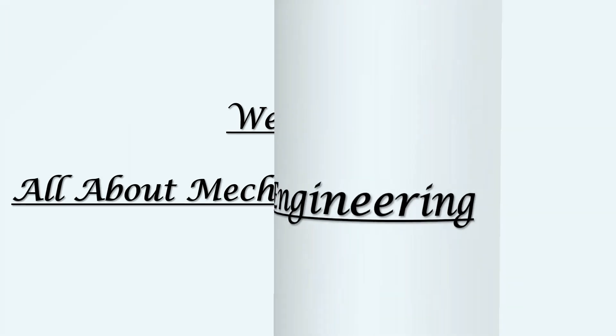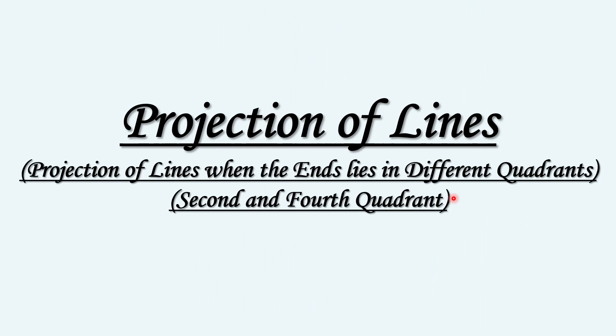Hi, welcome to all about mechanical engineering. Today we'll have another question on projection of lines in which one end of the line is in the second quadrant whereas the other end of the line is in the fourth quadrant.